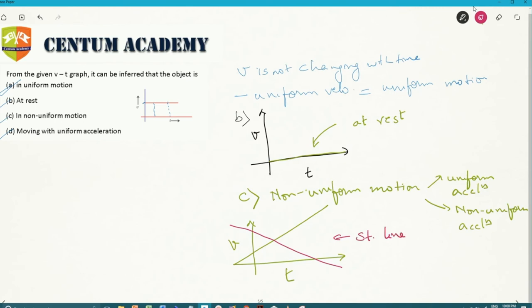Hence option D, moving with uniform acceleration, would be this one. If it was uniform deceleration, it would be this one. So in non-uniform motion, either this could be possible or the other possibility for non-uniform acceleration.